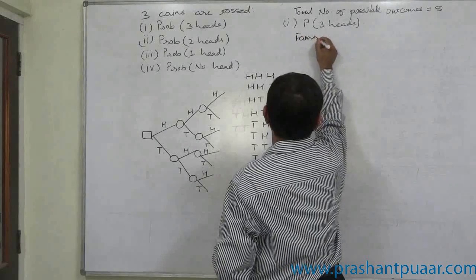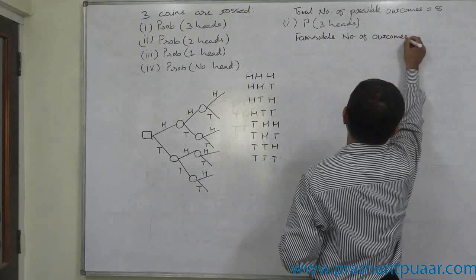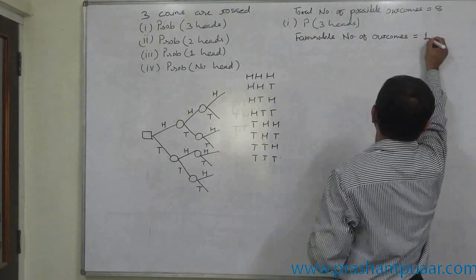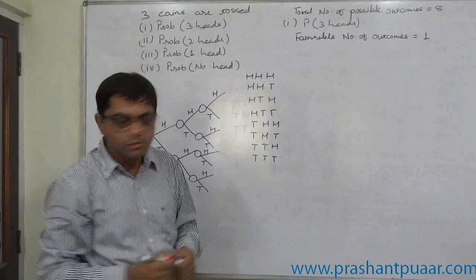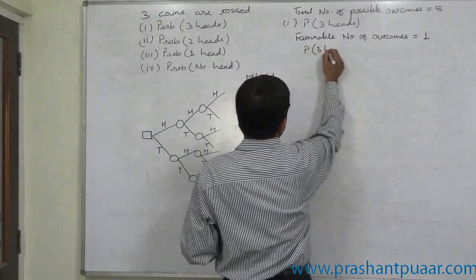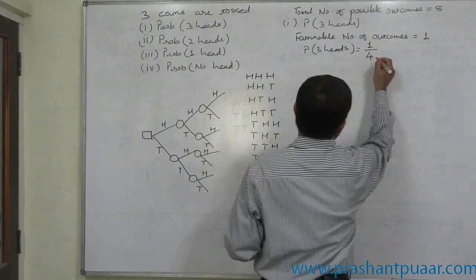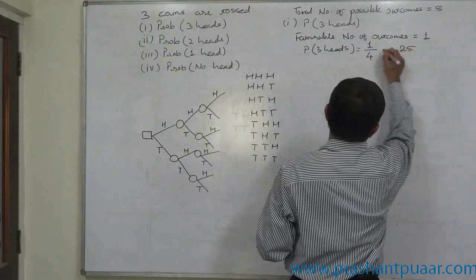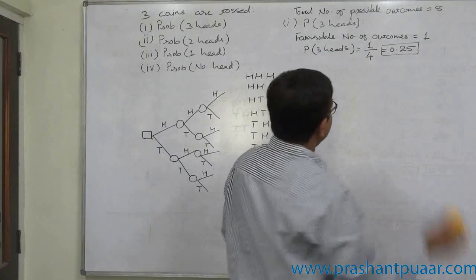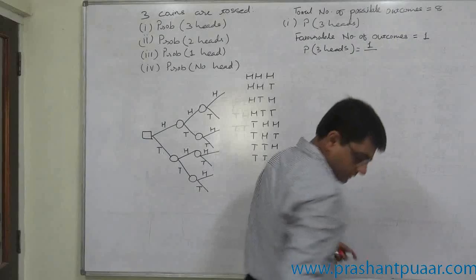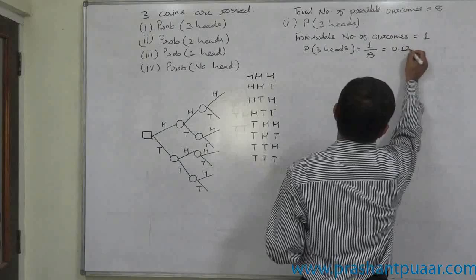That is the only outcome in favor of three heads, so the favorable number of outcomes is only one. Probability is the ratio of favorable outcomes to total number of outcomes. So the probability of three heads equals 1 divided by 8, that is 0.125.